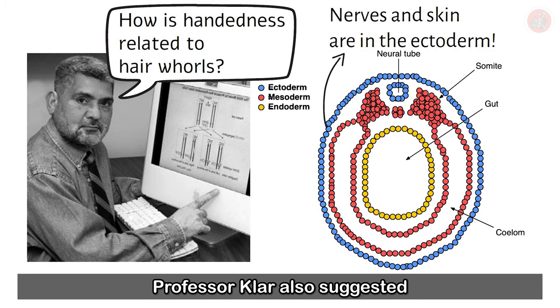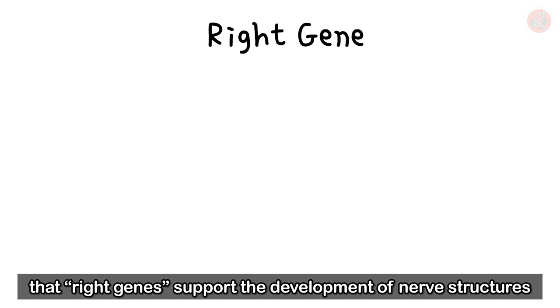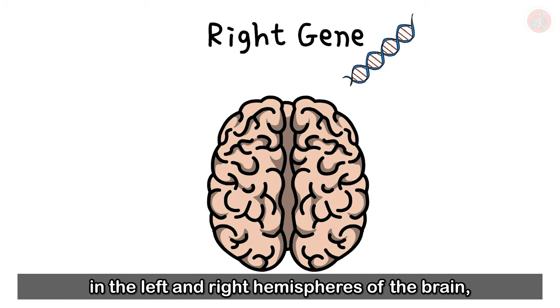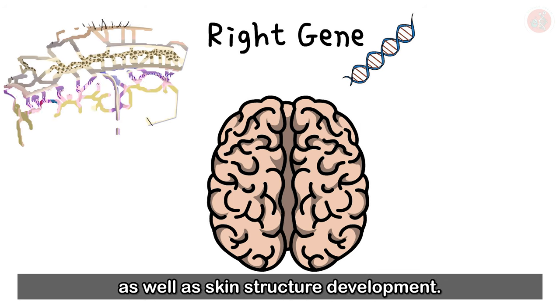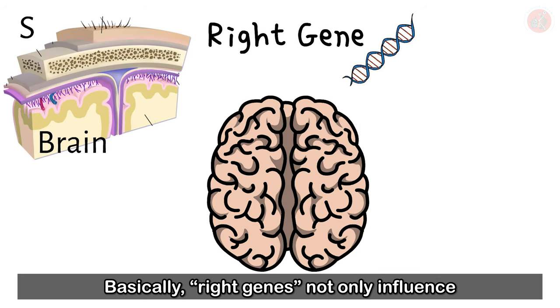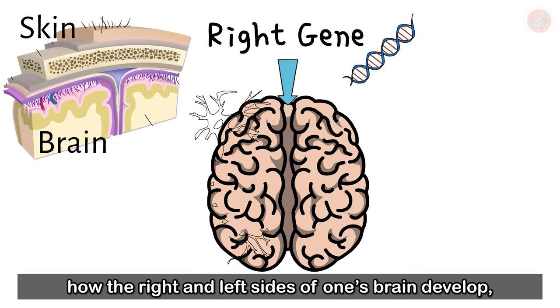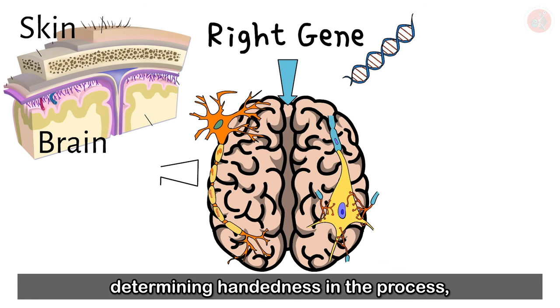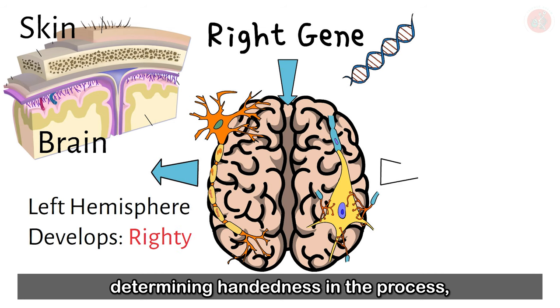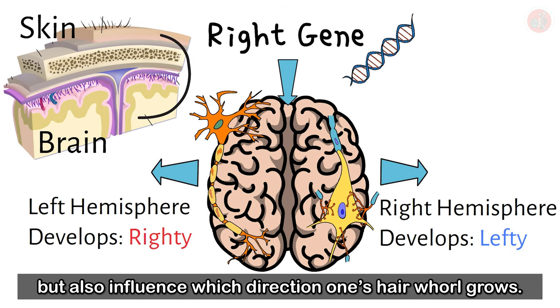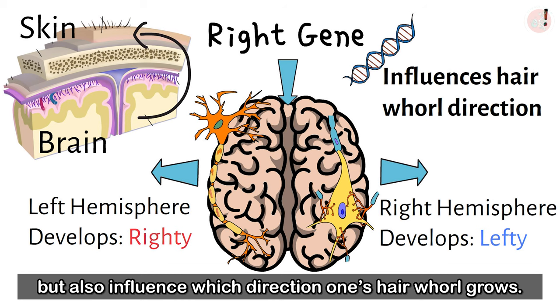Professor Klar also suggested that right genes support the development of nerve structures in the left and right hemispheres of the brain, as well as skin structure development. Basically, right genes not only influence how the right and left sides of one's brain develop, determining handedness in the process, but also influence which direction one's hair whirl grows.